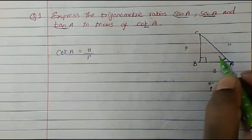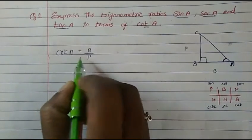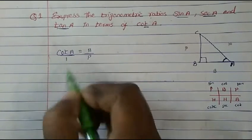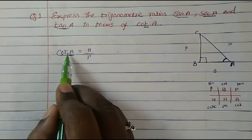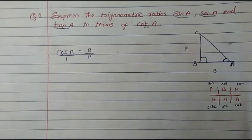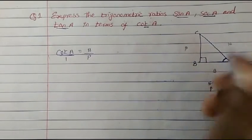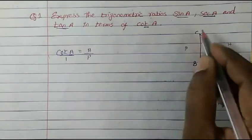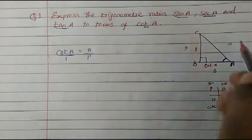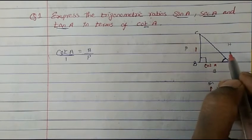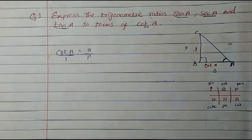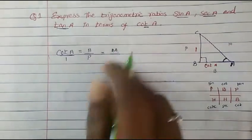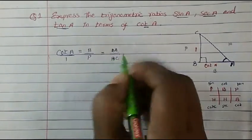This is in ratio, but here we consider that there is 1. So base is cot A, and perpendicular is 1. We don't know what the hypotenuse is, so we have to find it. Base is BA, perpendicular is BC, and we've put the values in. Now we use the Pythagorean theorem to find out the hypotenuse side.